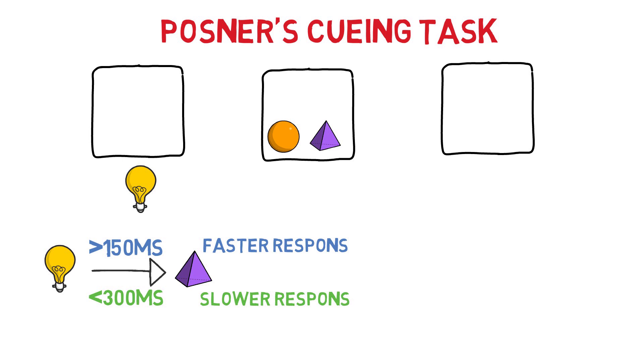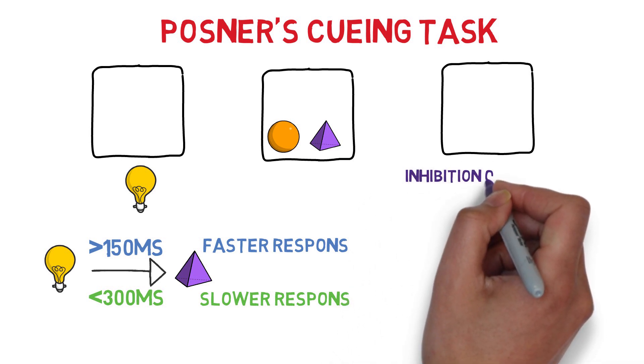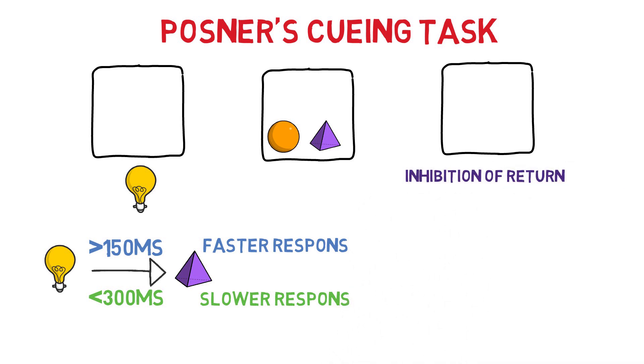This can be explained by assuming that the spotlight initially shifts to the cued location, but if the target does not appear, attention shifts to another location. This is called inhibition of return. Inhibition of return is a slowing of reaction time associated with going back to a previously attended location.